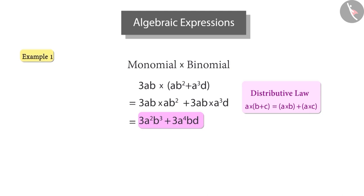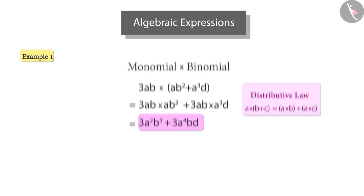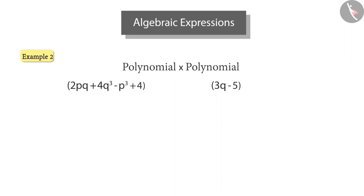When it comes to multiplying algebraic expressions, polynomial and polynomial multiplication is the most interesting. Here's an example. We are multiplying a polynomial with four terms and a polynomial with two terms.